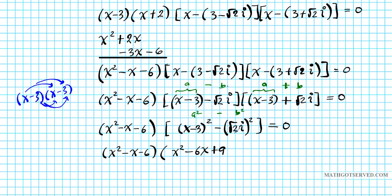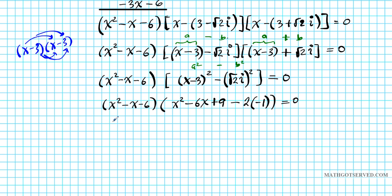Now what do you get when you square the square root of 2i? Well, we get negative. The square of a square root, the square root and the square cancel out since they're inverse operations, so we have 2 times... Now what do you get when you square i? i² is -1. Let's go ahead and simplify that further. So we are going to have (X² - X - 6) times (X² - 6X). Now -1 times -2 gives you positive 2. Plus 9 is plus 11, so 2 plus 9 is 11 equals 0.